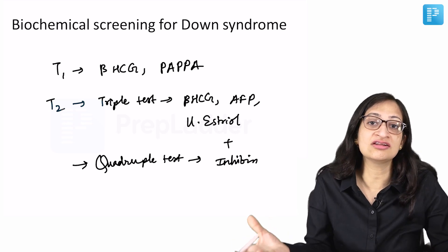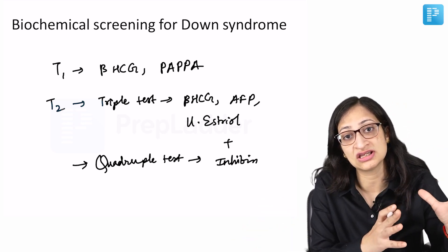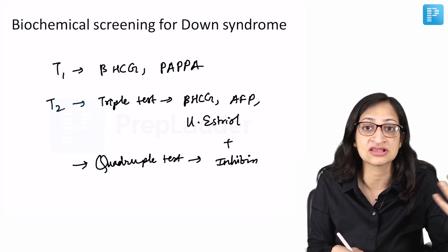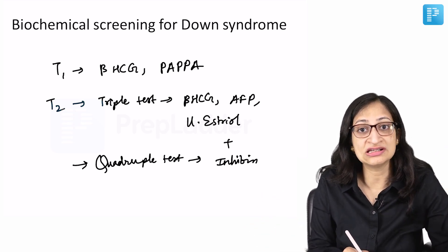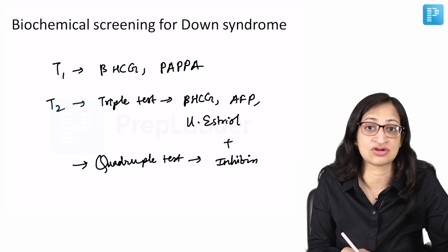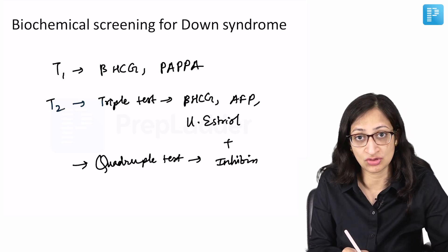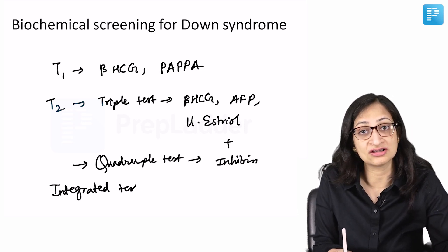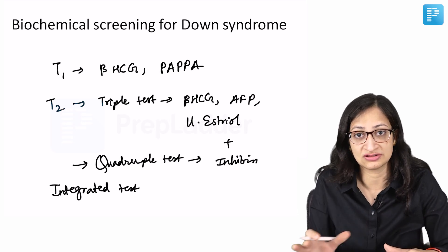There is an integrated test which takes into account the mother's age, the nuchal thickness, the PAPP-A levels, and the quadruple test of the second trimester, and gives you an integrated risk of whether there is increased risk of having a Down syndrome baby. The integrated test takes into account all factors and is the most sensitive screening test amongst these.